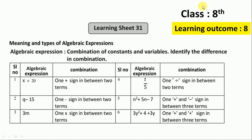In today's class we are going to solve Kalika Chetri ke 8th mathematics learning outcome number 8, learning sheet number 31: meaning and type of algebraic expressions. An algebraic expression is a combination of constants and variables. Identify the difference in combination here.